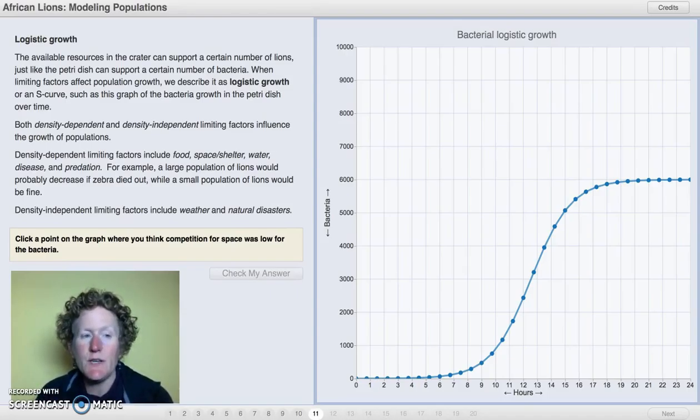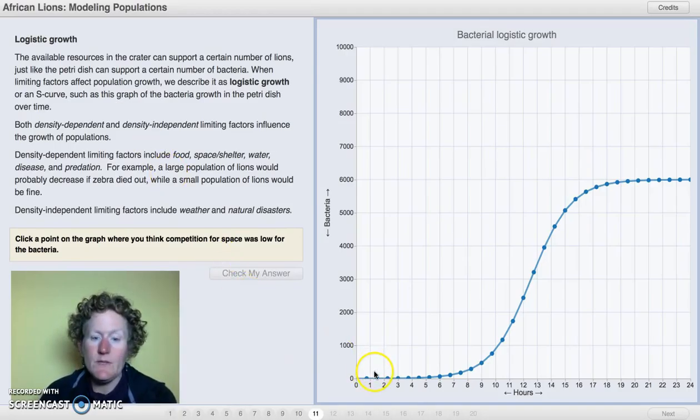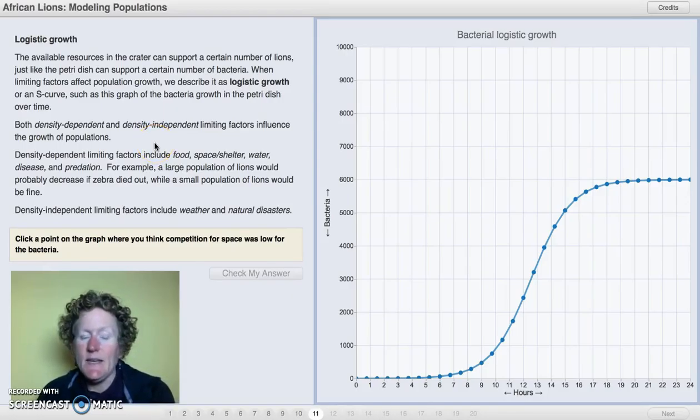Now that you've thought of your three limiting factors, let's talk about logistic growth. It's not exponential growth. It has a limit. The available resources in the crater can support a certain number of lions, just like the petri dish can support a certain number of bacteria. When limiting factors affect population growth, we describe it as logistic growth, or an S-curve. You can see how this curve here is exponential for a while, but then it levels off, and it's kind of in the shape of an S.